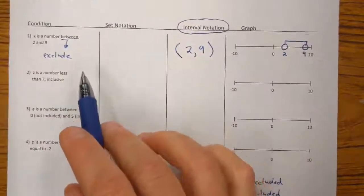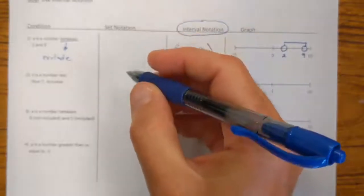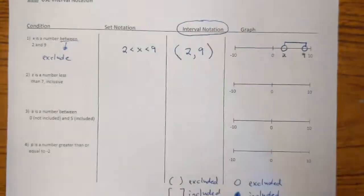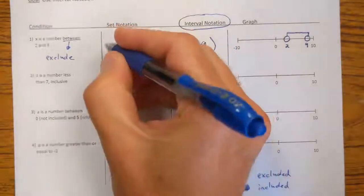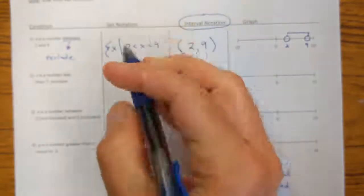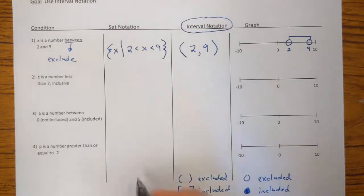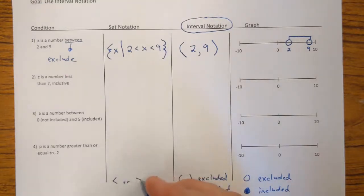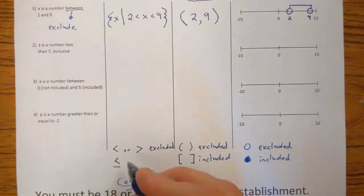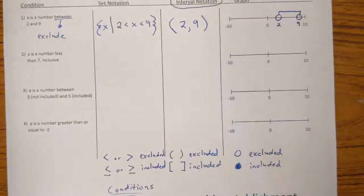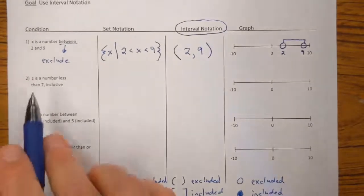Using set notation — we talked about compound inequalities in the previous lesson — the compound inequality here is 2 < x < 9, meaning the number is between 2 and 9. Using set builder notation, this means all values of x such that x is between 2 and 9. A less than or greater than sign means the endpoints are excluded, whereas a bar underneath the inequality symbol implies that the endpoints are included.